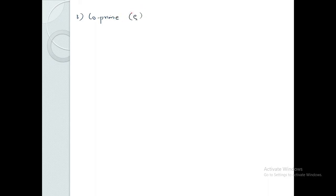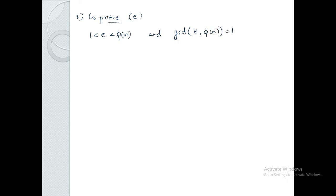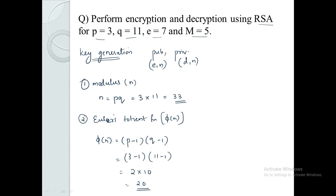The third step is to generate the co-prime value E. The conditions are: E must be less than phi of N, and GCD of E and phi of N must equal 1. In this question, E is already given as 7.